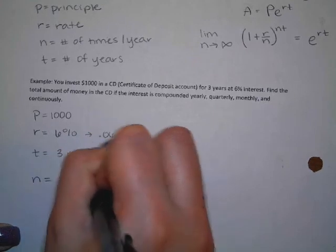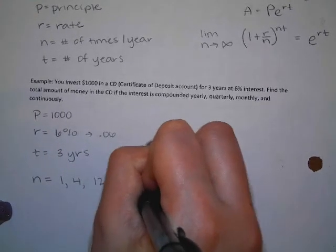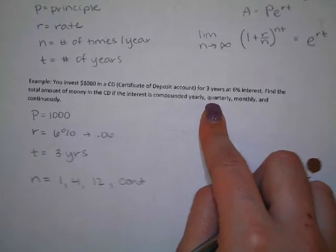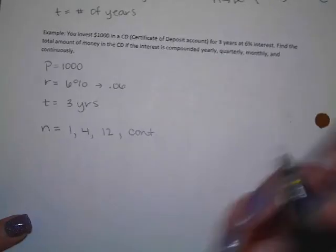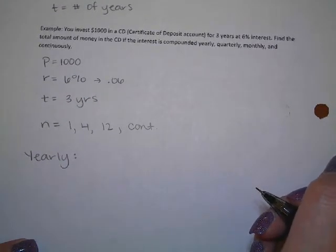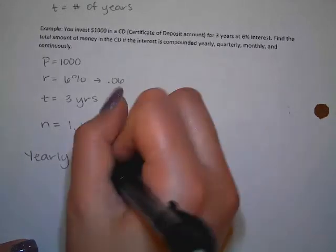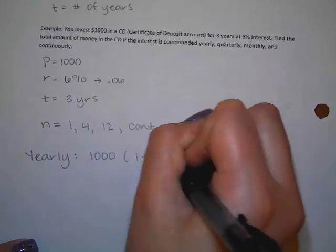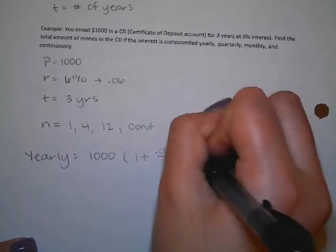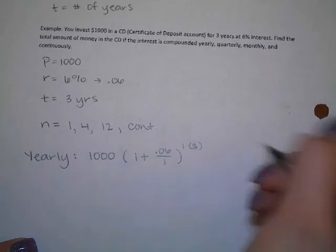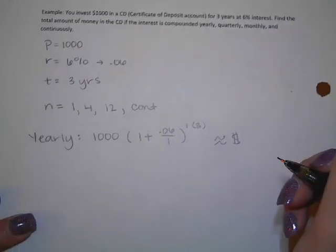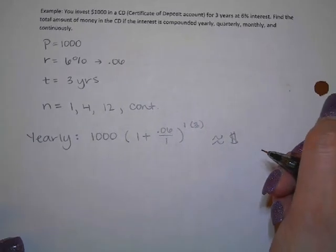What are the N's that we're going to use? 1, 4, 12, and then continuous. So many students tell me that quarterly is 25. I'm like, no, no, no. There are four quarters in a dollar. Quarter does not mean 25. So for yearly, what should I be writing? 1000(1 + 0.06/1) to the 1 times 3. So go ahead and type that in.